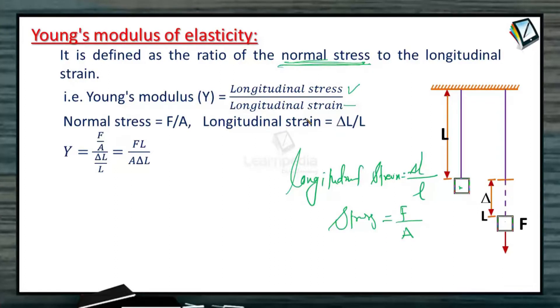In case of shear stress, the force is applied parallel to the cross-section, but in case of longitudinal stress, it is applied normal to the surface. That is why it is also known as normal stress.